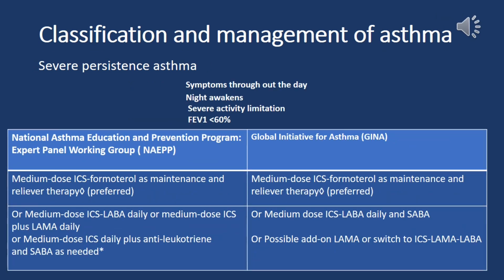Severe persistent asthma: symptoms throughout the day, night awakenings, severe activity limitation, FEV1 less than 60%. NAEPP recommends medium-dose ICS plus formoterol as maintenance and reliever therapy (preferred), or medium-dose ICS-LABA daily, medium-dose ICS plus LAMA daily, or medium-dose ICS daily plus anti-leukotriene and SABA as needed. GINA recommends medium-dose ICS plus formoterol as maintenance and reliever therapy (preferred), or medium-dose ICS-LABA daily and SABA, possibly with add-on LAMA or switching to ICS-LAMA-LABA. Both guidelines recommend medium-dose ICS plus formoterol as first-line in severe persistent asthma.